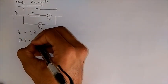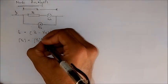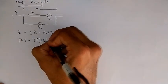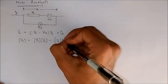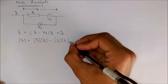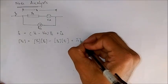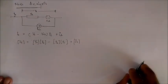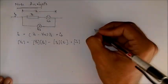So branch current IB equals branch admittance YB multiplied by branch voltage VB, minus YB times VS (voltage sources), plus ISK (current sources). Now we multiply the whole equation by matrix A, which is the incidence matrix.